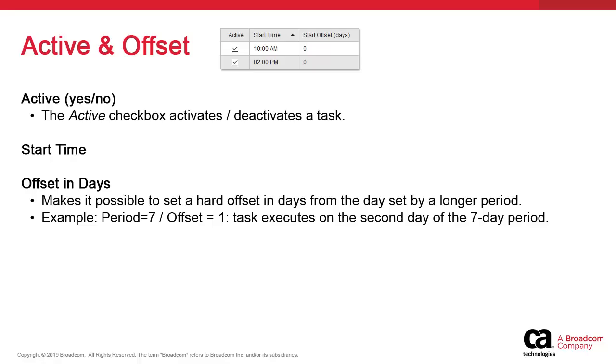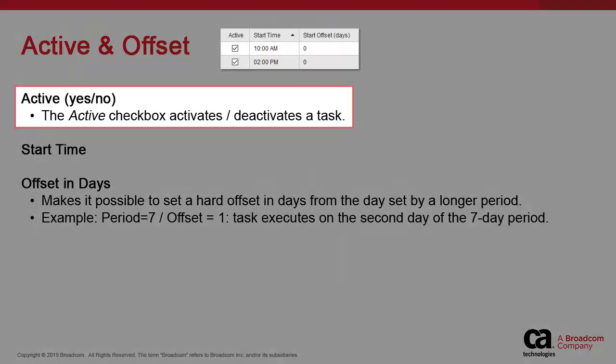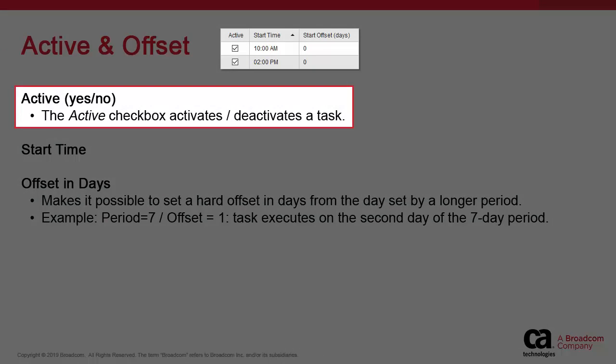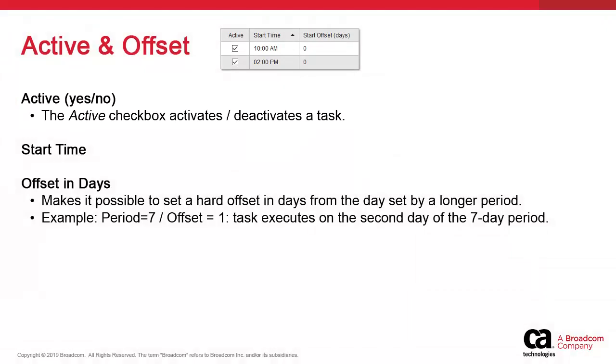Let's consider the first three properties. The active checkbox allows you to enable or disable a task in the schedule. If you uncheck it, the rest of the schedule object remains unchanged but you simply deactivate one of the tasks. We have already discussed the start time, and that should be understood.